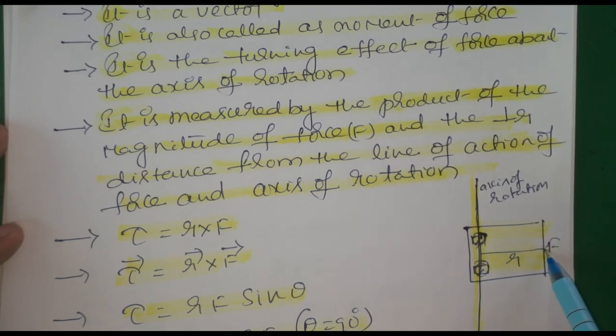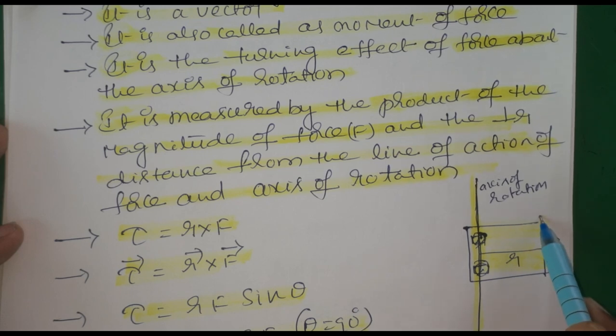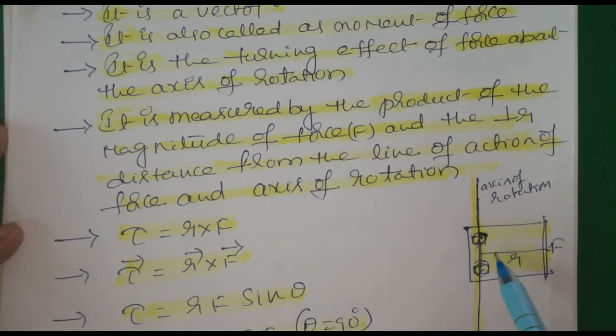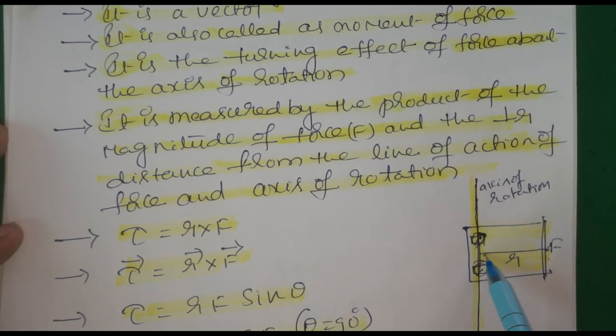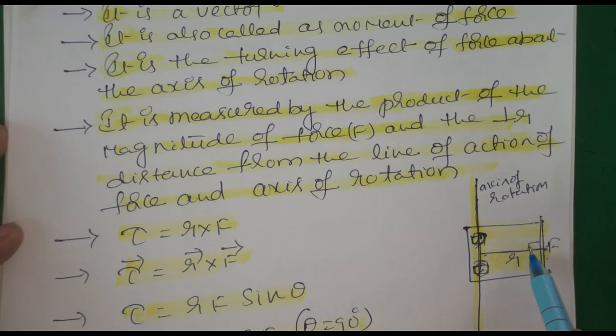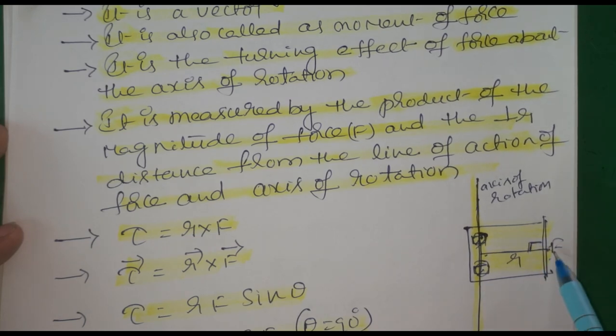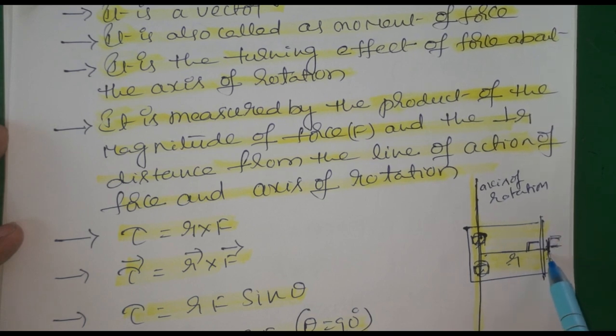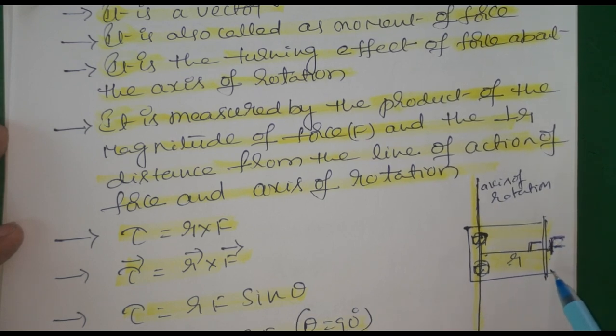This becomes the line of action of force. This is the axis of rotation. The distance between these two is called perpendicular distance. So this force times this perpendicular distance - we simply call this torque or turning effect or moment of force when we open or close the door.